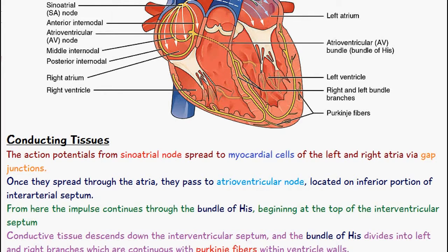Once the action potential has spread throughout the atria, it passes to the atrioventricular node. You can see its location here — it's located on the inferior portion of the interatrial septum.